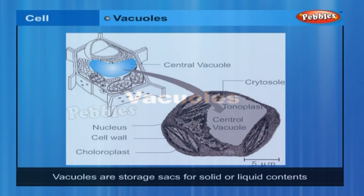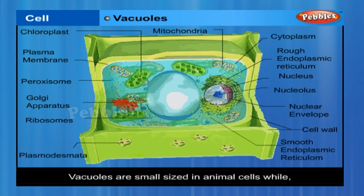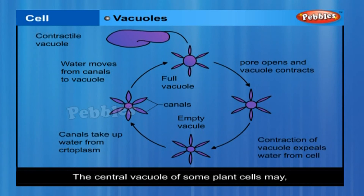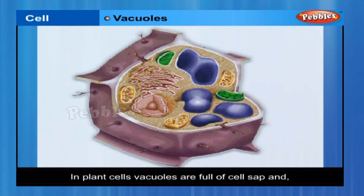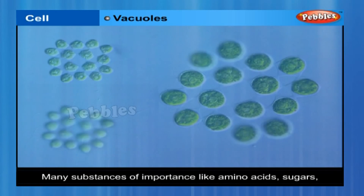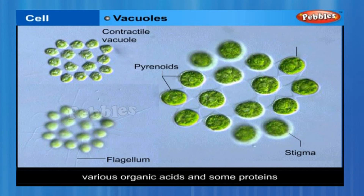Vacuoles are storage sacs for solid or liquid contents. They are small-sized in animal cells, while plant cells have very large vacuoles. The central vacuole of some plant cells may occupy 50–90% of the cell volume. In plant cells, vacuoles are full of cell sap and provide turgidity and rigidity to the cell. Many substances of importance are stored in vacuoles, including amino acids, sugars, various organic acids and some proteins.